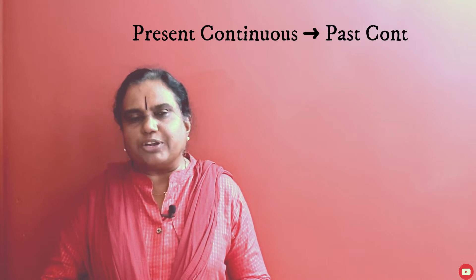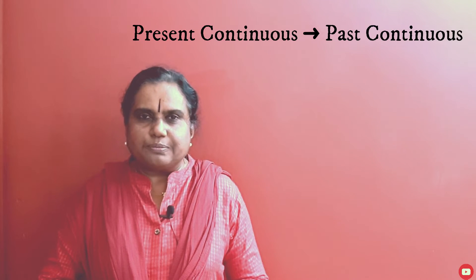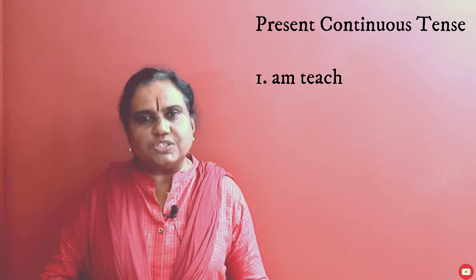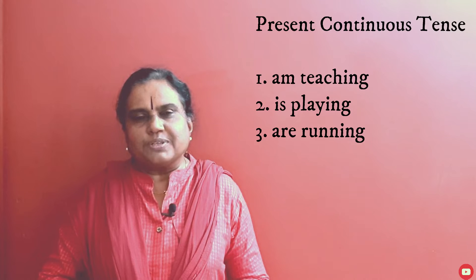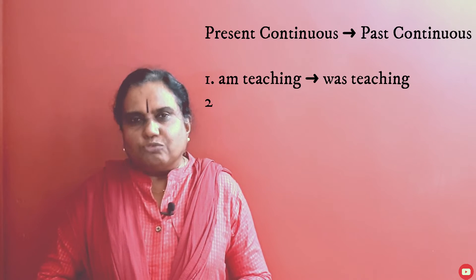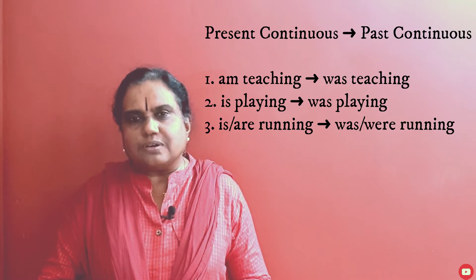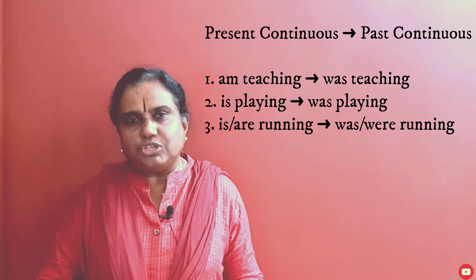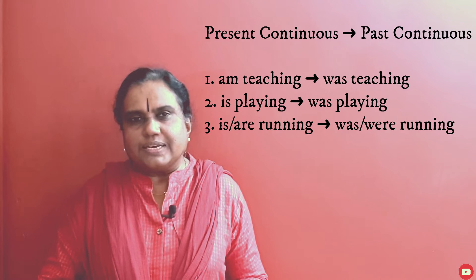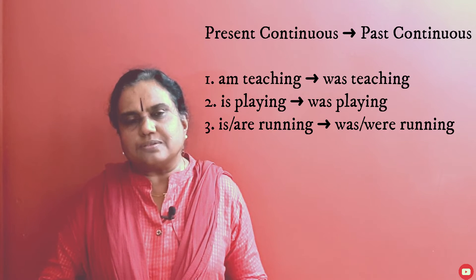Present continuous tense becomes past continuous tense in indirect speech. Present continuous tense uses 'am/is/are + present participle': I am teaching, is playing, is running. In indirect speech this becomes: was teaching, was running, was playing.